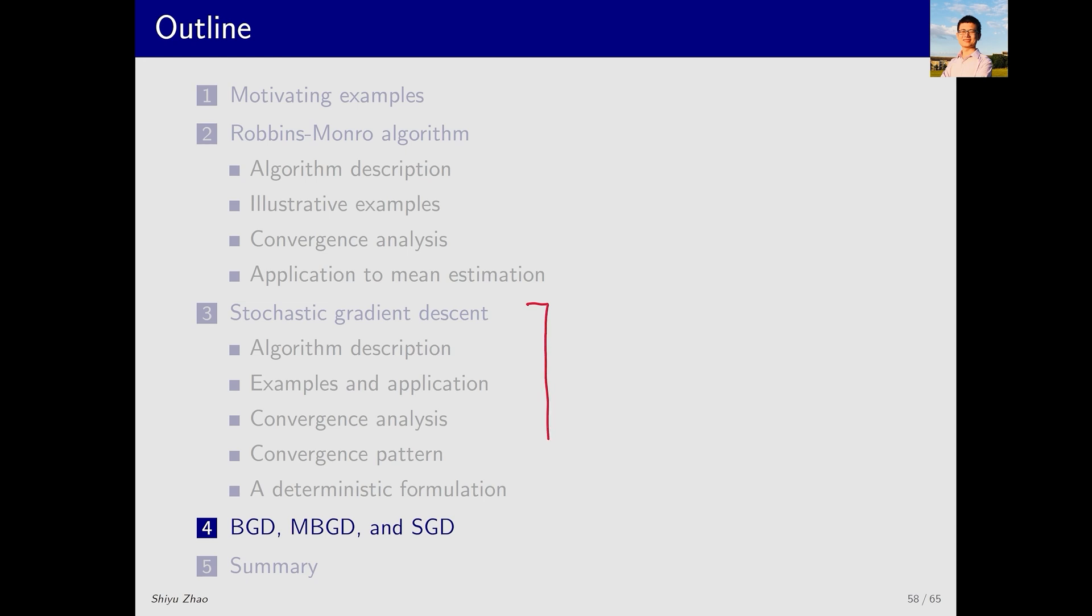We have finished introducing stochastic gradient descent. Next, we move to the fourth part where we continue discussing SGD. Specifically, we compare SGD with two other common algorithms, batch gradient descent and mini-batch gradient descent.